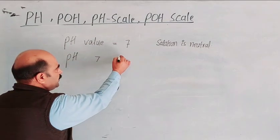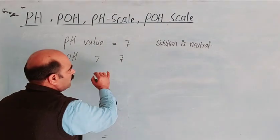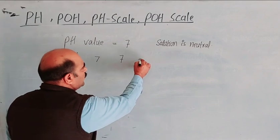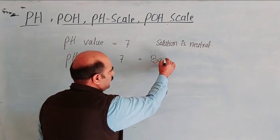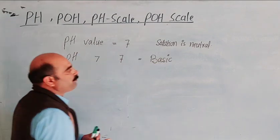If the pH value for a solution is greater than 7, then the solution is basic.